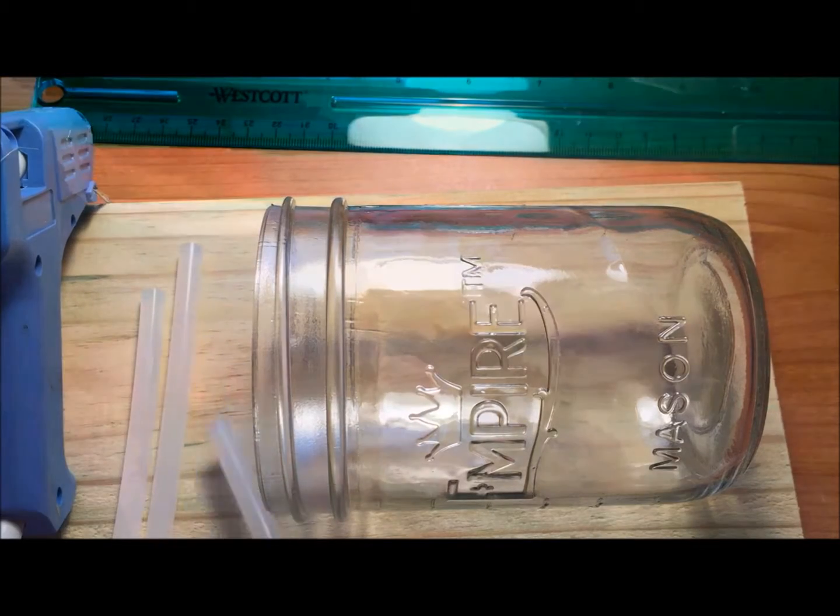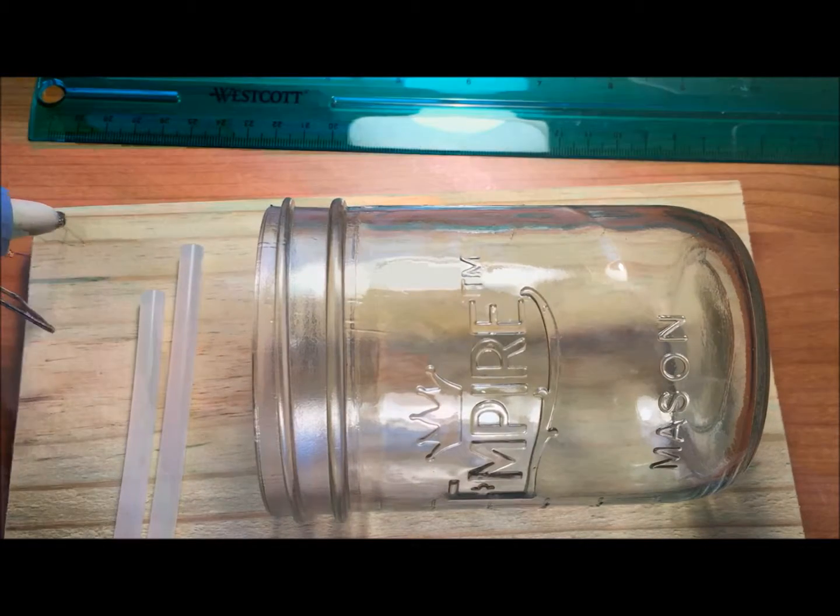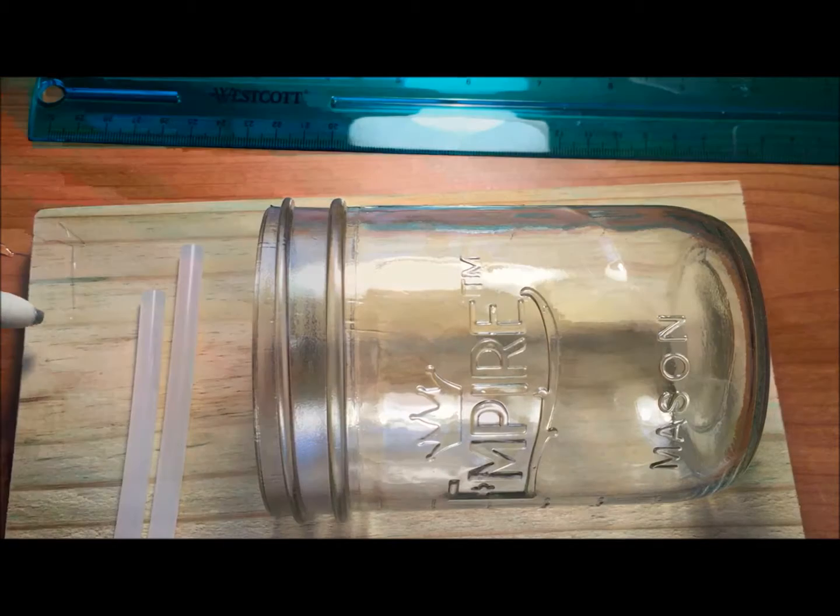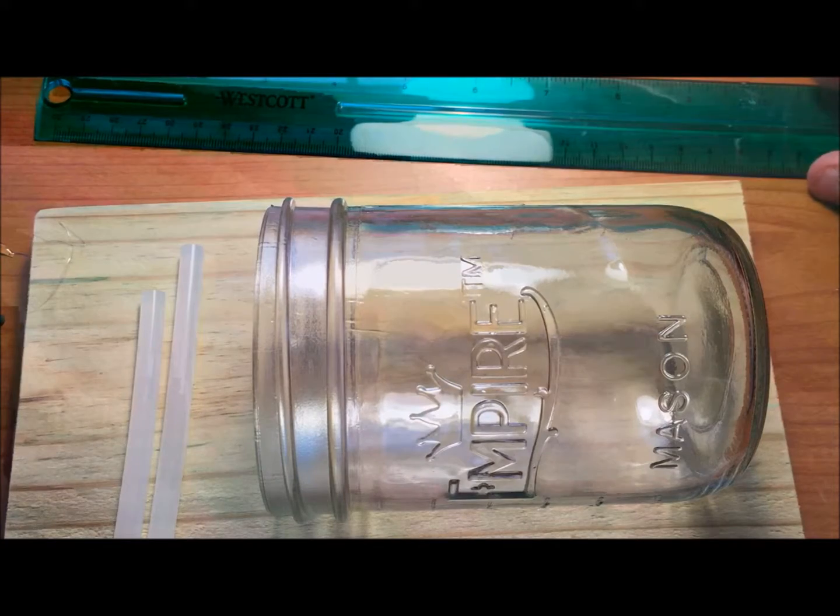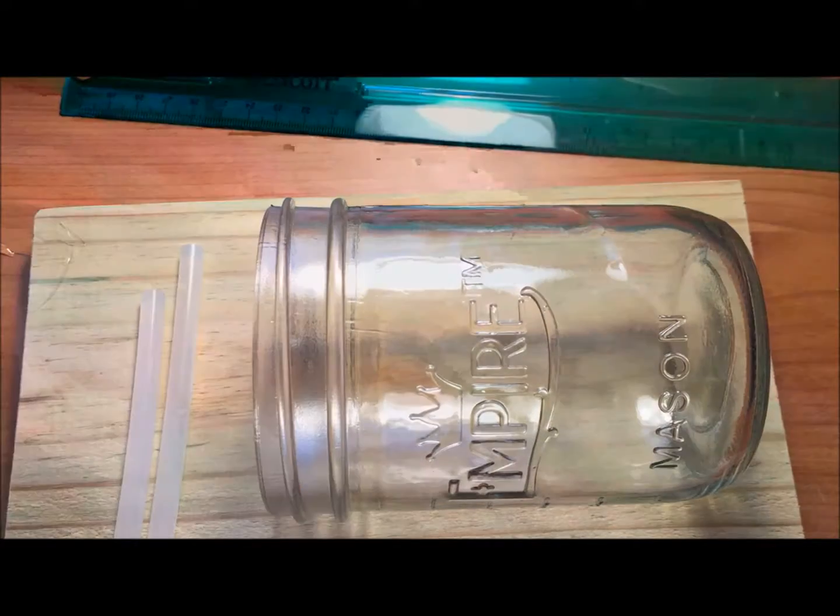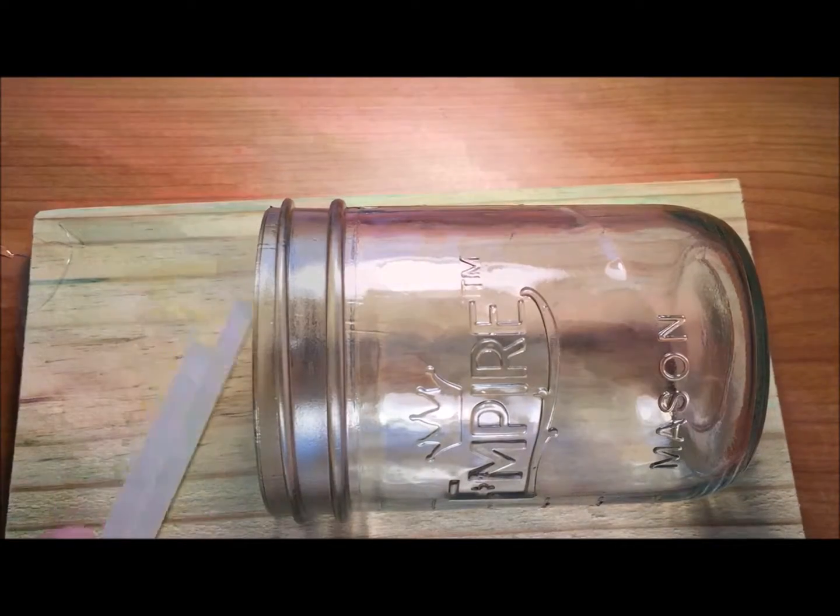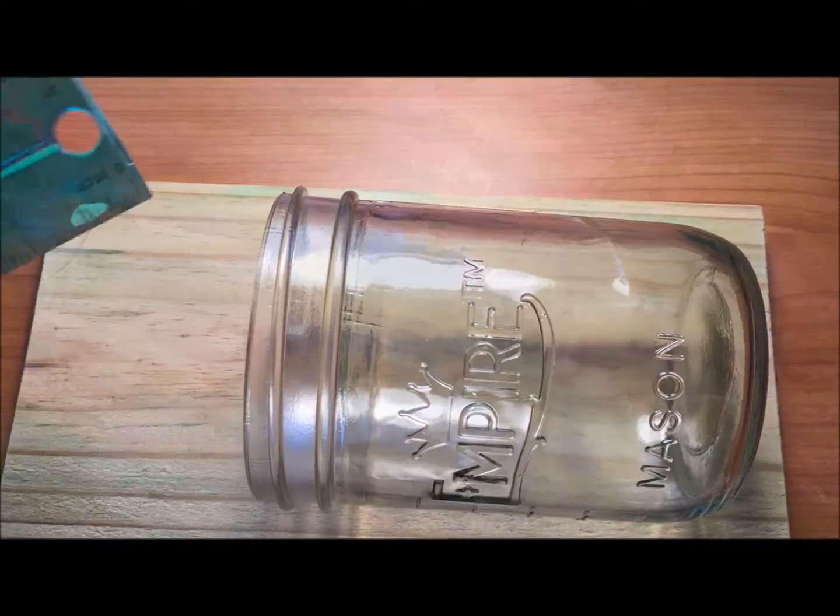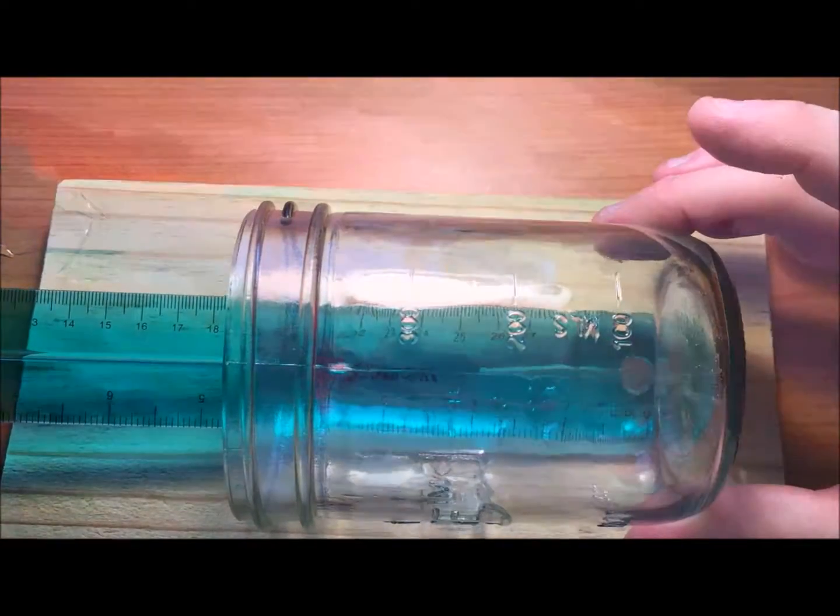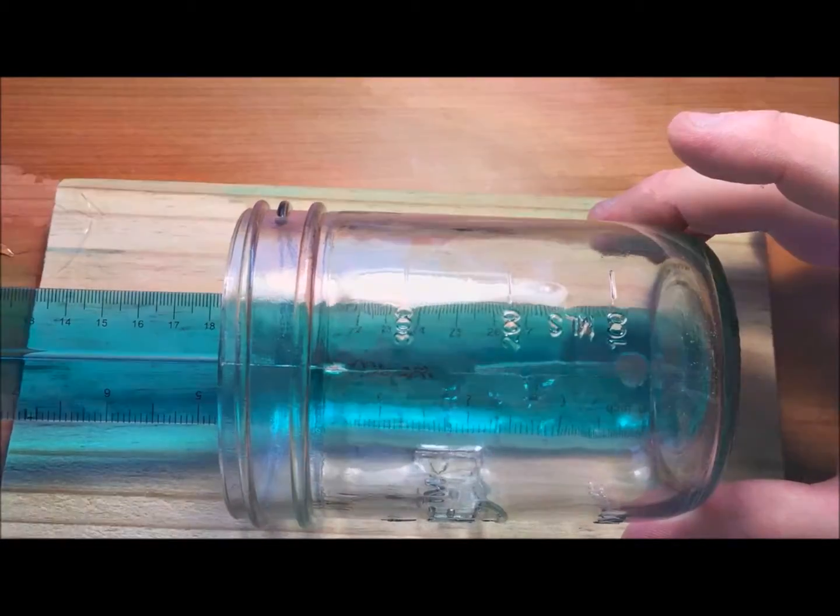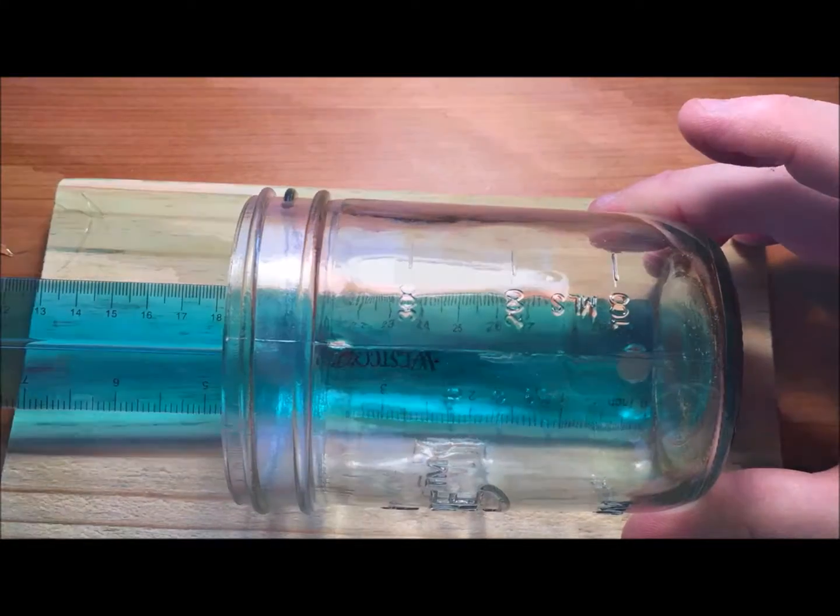I've got my hot glue gun plugged in. I'm going to glue in two places the ruler into the mason jar. I want the mason jar bottom to be coincident with the ruler bottom as closely as possible. I'm going to stick a bunch of glue on the ruler and then put it in there as quickly as I can and hold it in place.